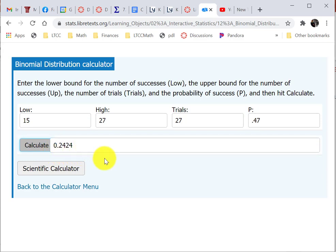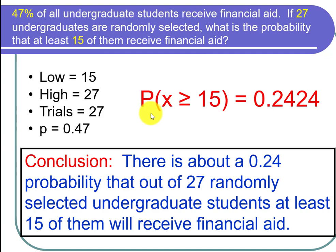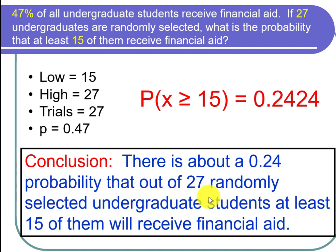Now let's interpret what we found. The probability that x is greater than or equal to 15 equals 0.2424, or to two decimal places, 0.24. My conclusion is that there is about a 0.24 probability that out of 27 randomly selected undergraduate students, at least 15 of them will receive financial aid.